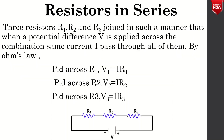Resistors in series. Three resistors R1, R2 and R3 are joined such that when a potential difference V is applied across the combination, the same current I passes through all of them. By Ohm's law, potential difference across R1 is V1 = IR1, potential difference across R2 is V2 = IR2, and potential difference across R3 is V3 = IR3.